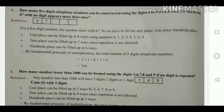By the fundamental principle of multiplication, the total number of 5-digit telephone numbers is 1 × 1 × 8 × 7 × 6 (where 6 and 7 each count as 1 fixed digit). Multiplying gives 336 ways.